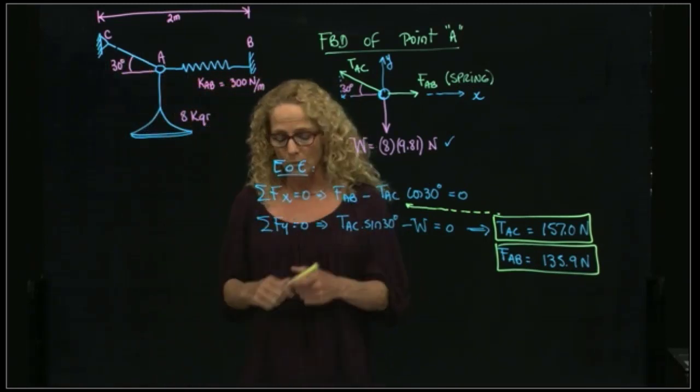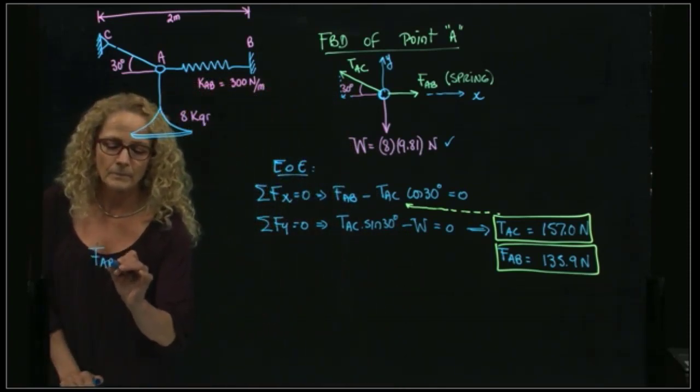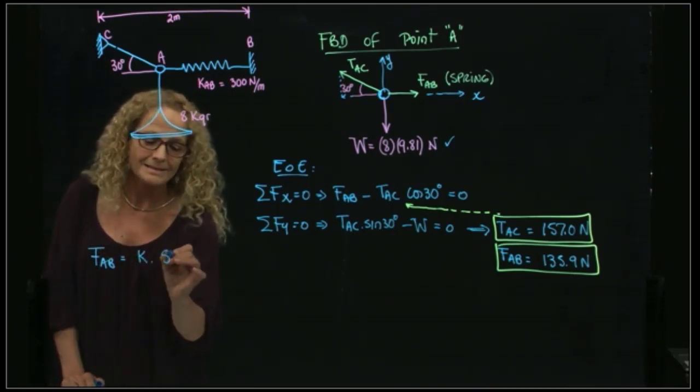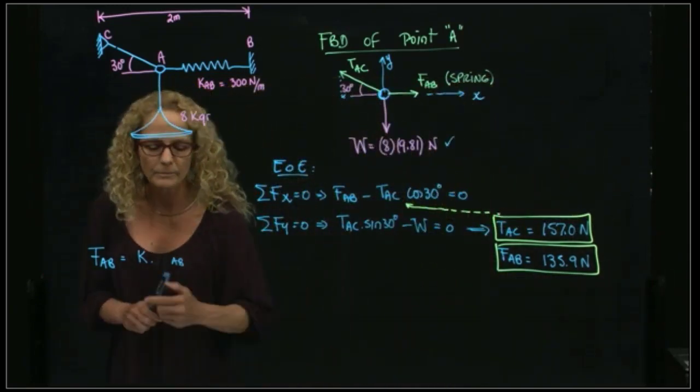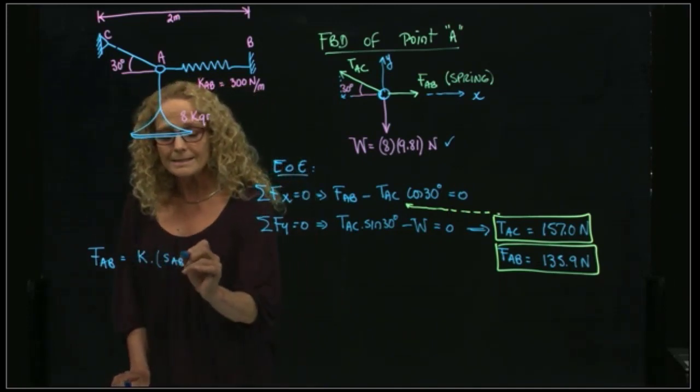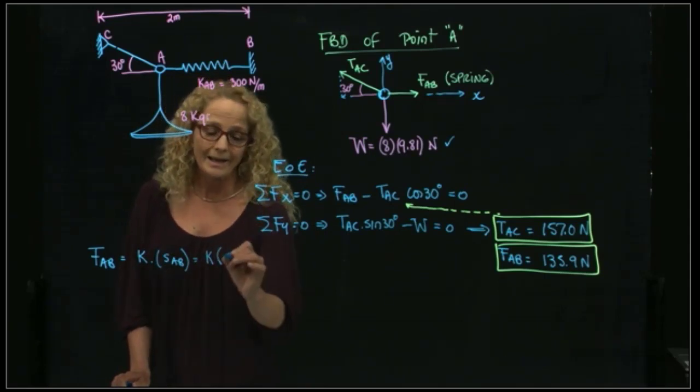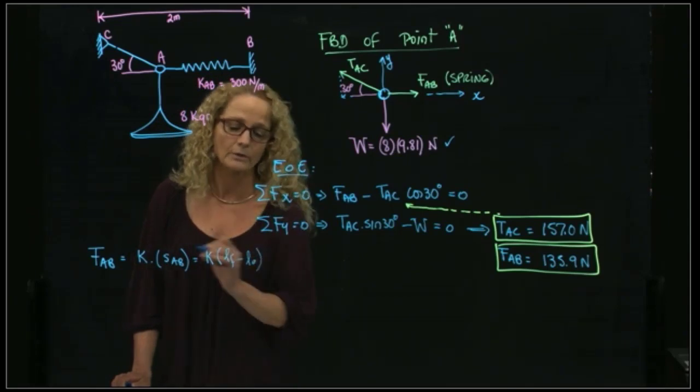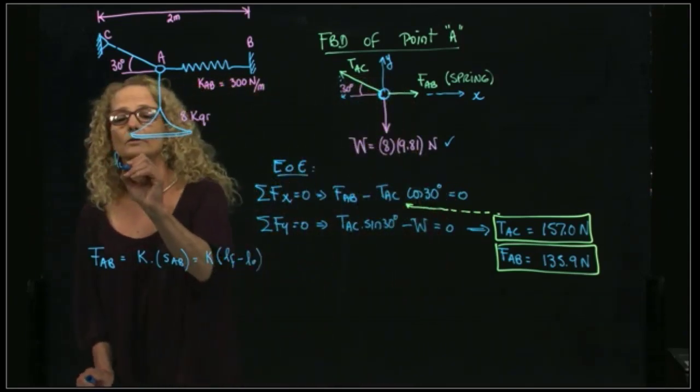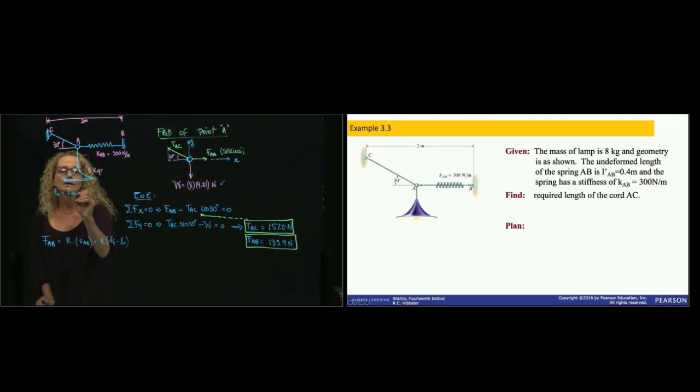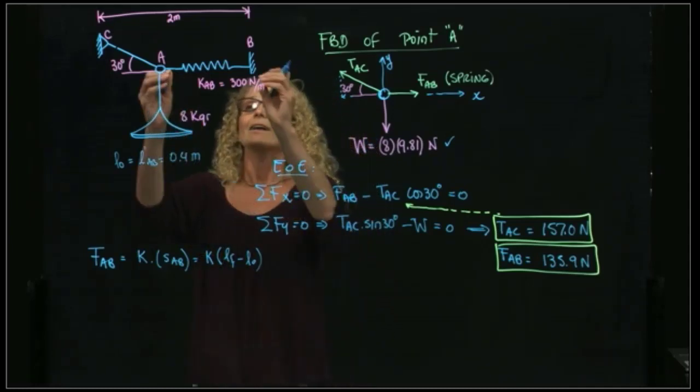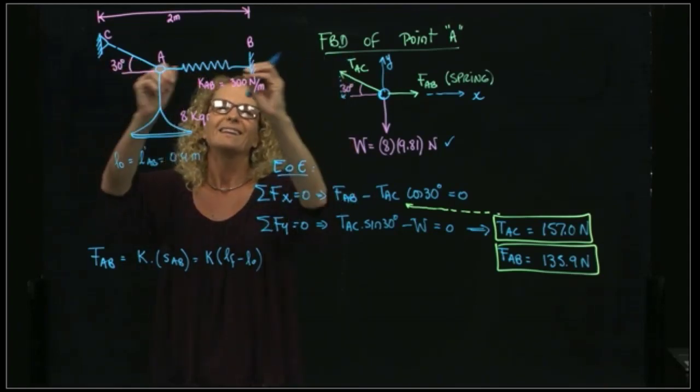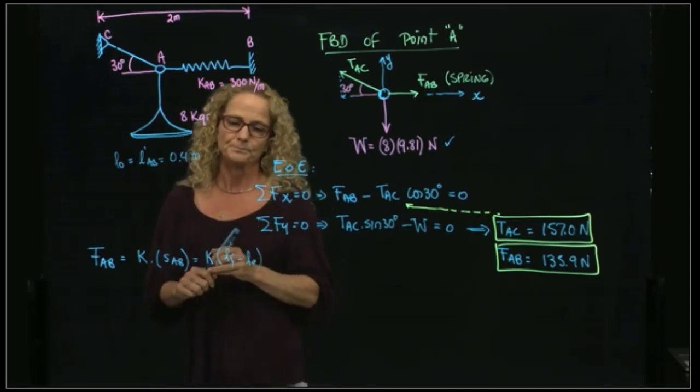What do we do with that? We know that the force of the spring is equal to the constant of the spring times s. And what is sAB? That will be the final length of the spring minus the initial length of the spring. And we are told that the initial length of the spring is 0.4 meters. So that's the unstretched length of the spring. As soon as I apply a force, the spring is stretched, and that's this length over here.